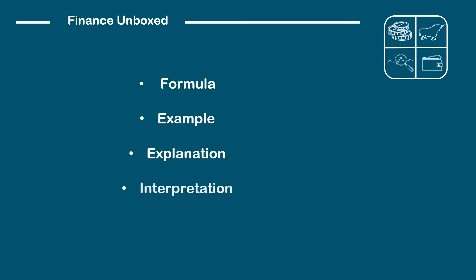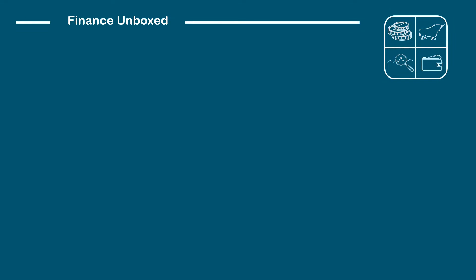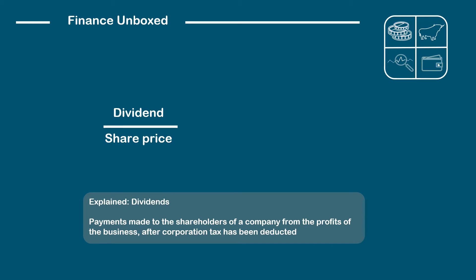The formula for dividend yield is actually quite simple: it's dividend divided by share price, and the dividend yield is expressed as a percentage. One thing to keep in mind is that the dividend is the annual dividend of the company. Further on in the video I'll give you a couple of different methods to calculate this dividend if it isn't available.